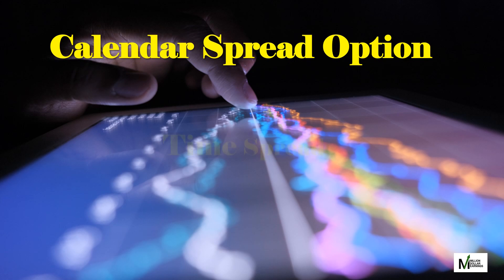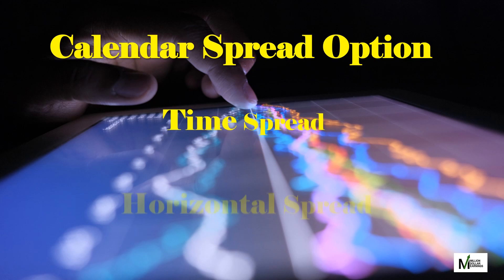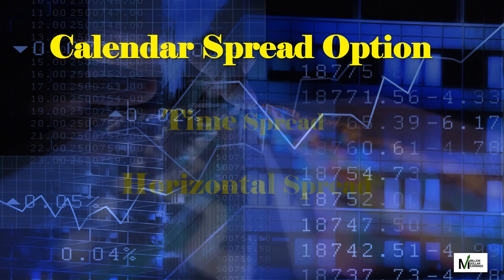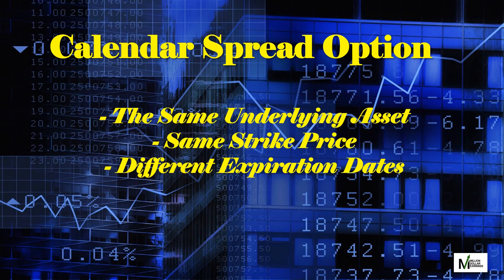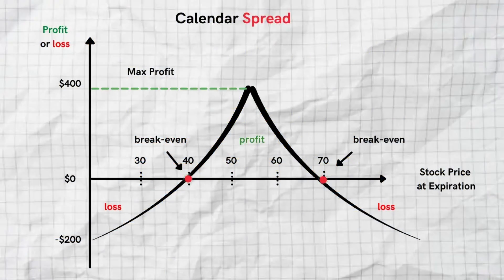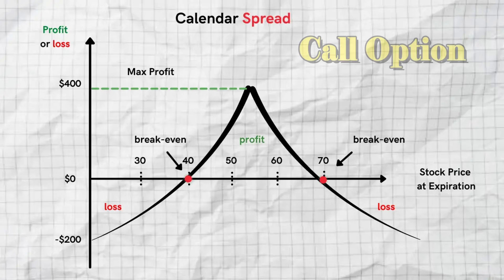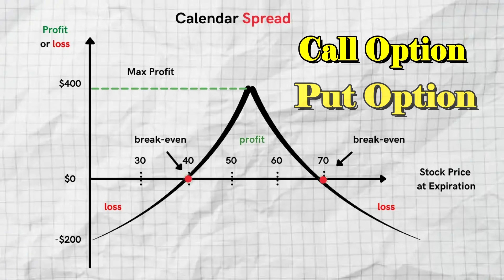A calendar spread option, also known as a time spread or horizontal spread, is an options trading strategy that involves buying and selling options of the same underlying asset with the same strike price, but with different expiration dates. Calendar spreads profit from the relative difference in time decay rates between the two options. The goal is for the short leg to lose value faster than the long leg, leading to a net profit for the overall position. This strategy can be implemented using either call options or put options.